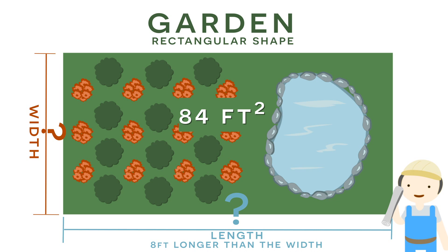Find the length and find the width. Once again, the total area is 84 square feet and the length must be 8 feet longer than the width.